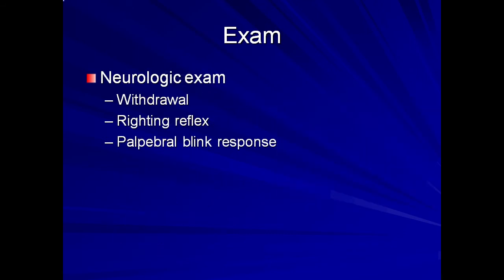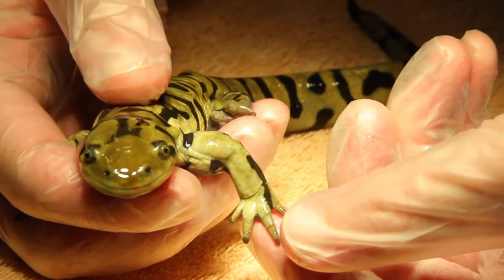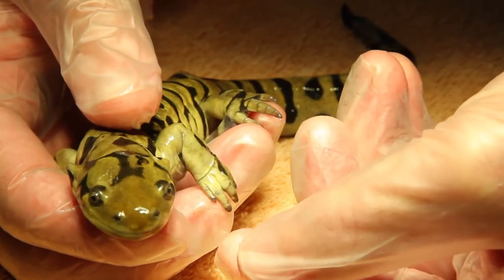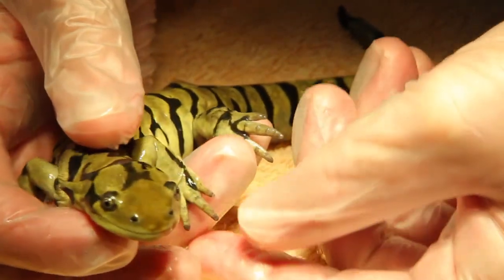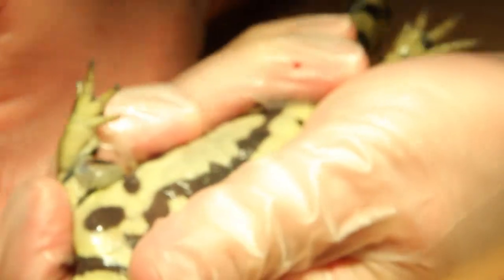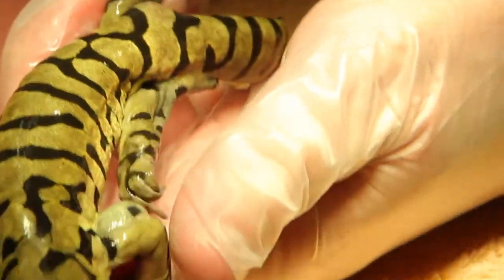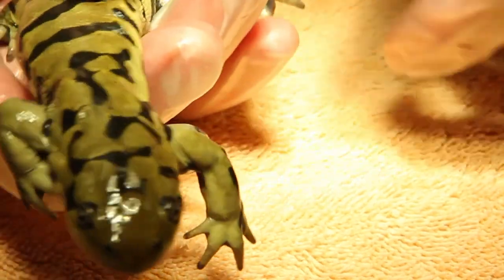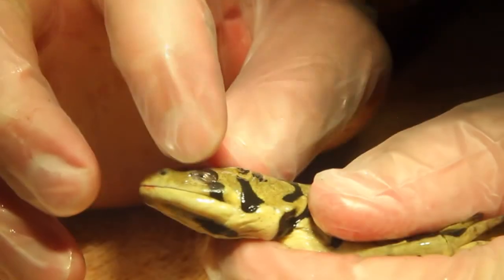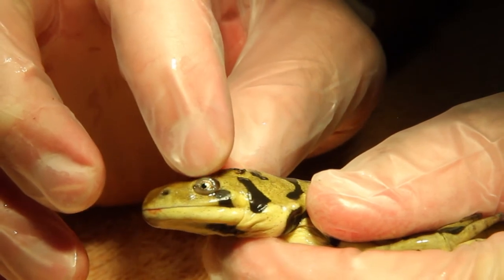In many cases, a complete neurologic exam is not needed if the animal appears appropriate and is ambulating normally. But in cases of problems with ambulation, posture, or lethargy, the neurologic exam may yield additional information. Three major reflexes can be easily tested: each limb should withdraw when a toe is pinched; the animal should recognize the abnormal position and try to right itself when placed on its back; and there should be a strong palpebral blink response.